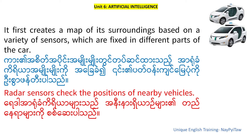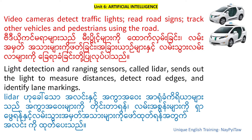Radar sensors check the positions of nearby vehicles. Video cameras detect traffic lights, read road signs, and track other vehicles and pedestrians using the road.